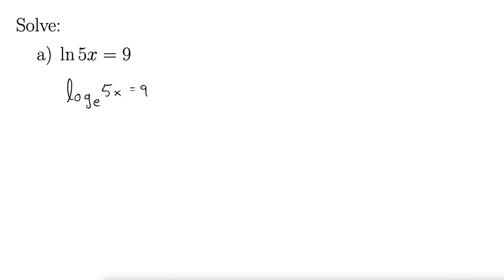So what we're really saying is log base e of 5x equals 9. And then we convert this into exponential form. To do that, you start with the base, go around here out to the 9, that's the exponent, and then back inside for the equals. So exponential form of this is e to the 9 equals 5x.